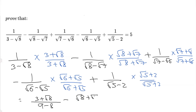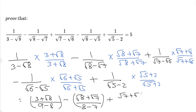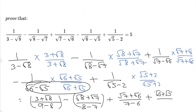For the second term the numerator is minus root 8 plus root 7, and the denominator is 8 minus 7, which equals 1. For the third term the numerator is root 7 plus root 6 and the denominator is 7 minus 6, which is 1. For the fourth term the numerator is root 6 plus root 5, and root 6 squared is 6 minus root 5 squared is 5, so the denominator is 1.